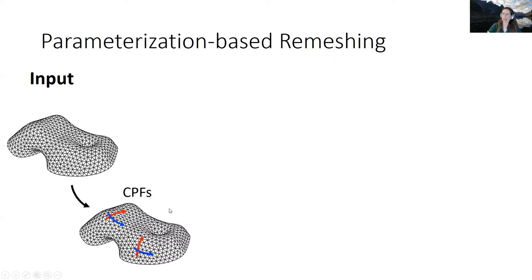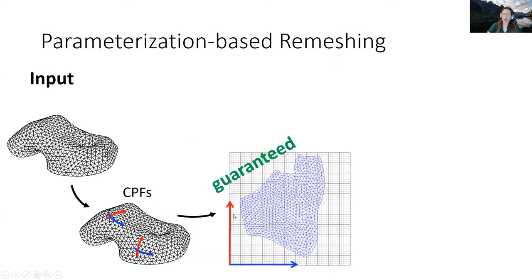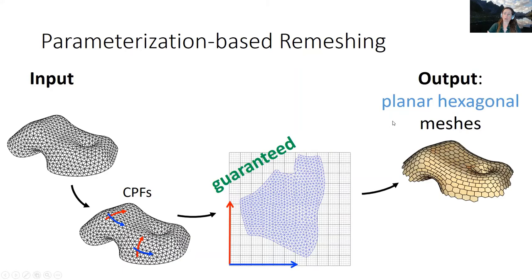which fulfill a certain continuity constraint, which guarantees the existence of an integrable parametrization. Using this parametrization, we lift a grid back to our input surface and use it to generate our output planar hexagonal mesh.